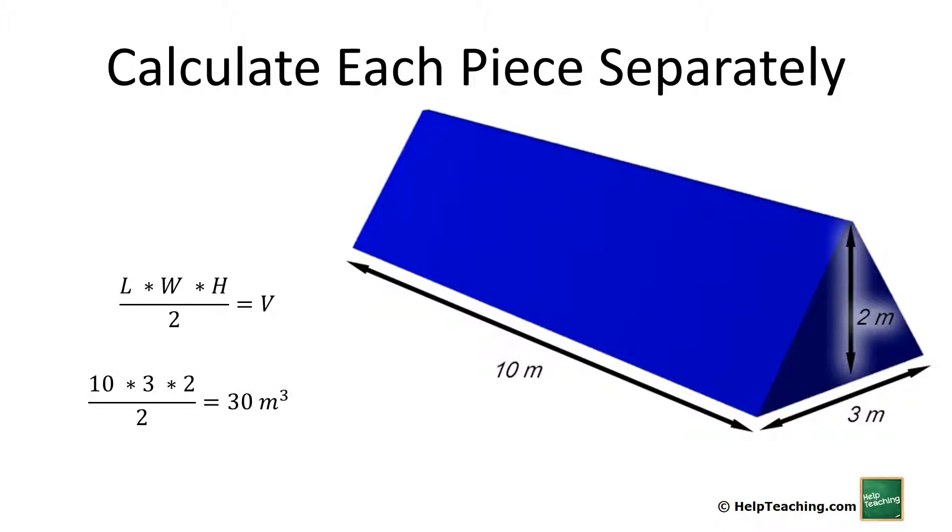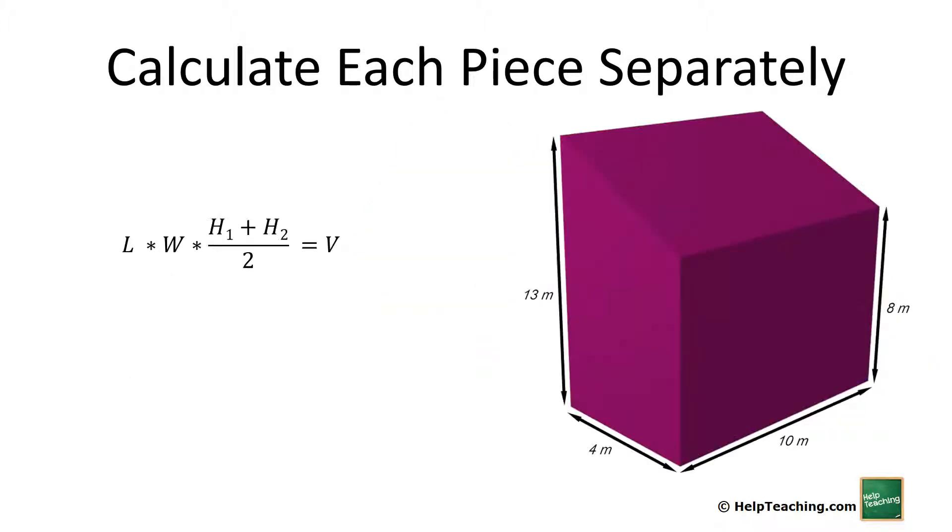Next we have this addition part. Again, it's very similar to a rectangular prism except this time we have two heights, so we do the same thing and average our heights. We have 4 times 10, and we average our heights of 13 and 8 and multiply that to get 420 cubic meters.